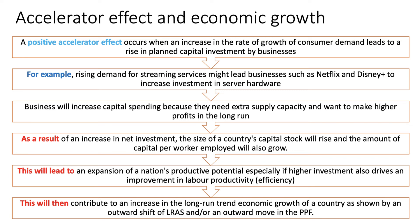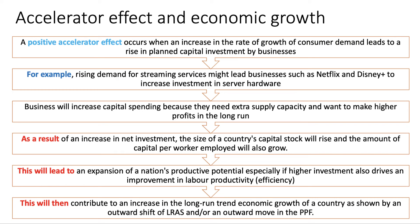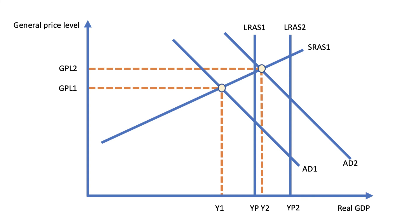So, we've got a positive accelerator effect contributing to higher long-term growth, and we've built a logical chain of reasoning. You can either shift the aggregate supply curve out, if you want to include a diagram to support the analysis, or you can shift the aggregate demand curve out — because, of course, investment is part of the aggregate demand function — or you can shift both out.